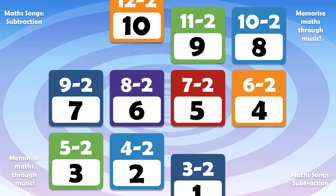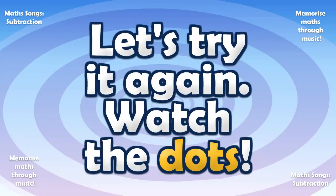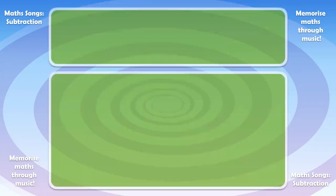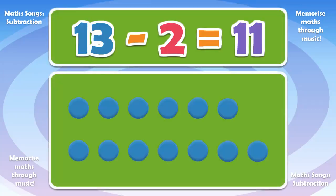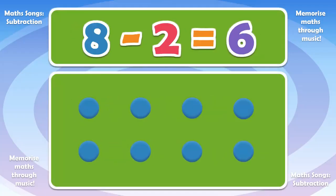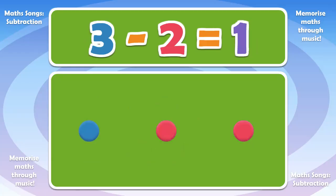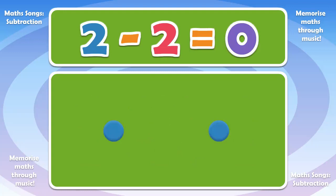Let's try it again. Watch the dots. 13-2 is 11. 11-2 is 9. 8-2 is 6. 5-2 is 3. 3-2 is 1. 2-2 is 0.